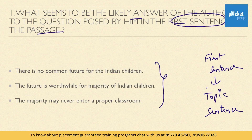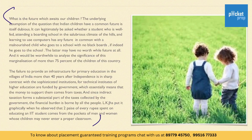The options are: there is no common future for Indian children; the future is worthwhile for the majority of Indian children; the majority may never enter a proper classroom. Let's find the answer from the first sentence of the passage: 'what is the future which awaits our children?'